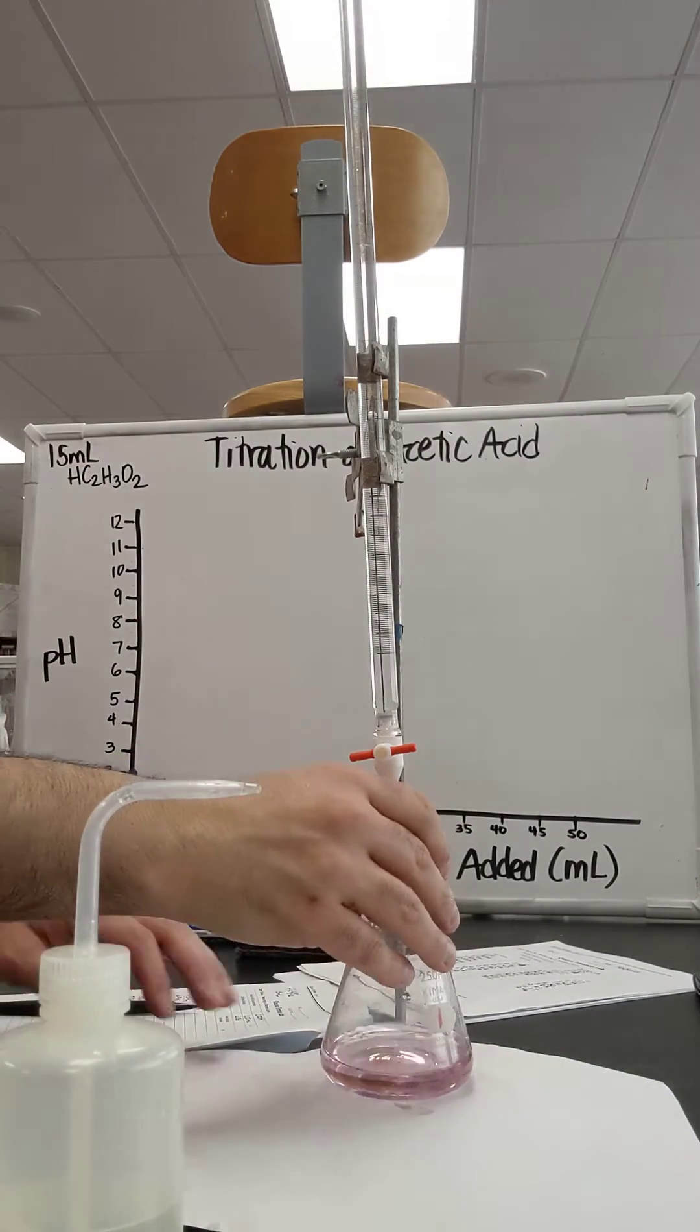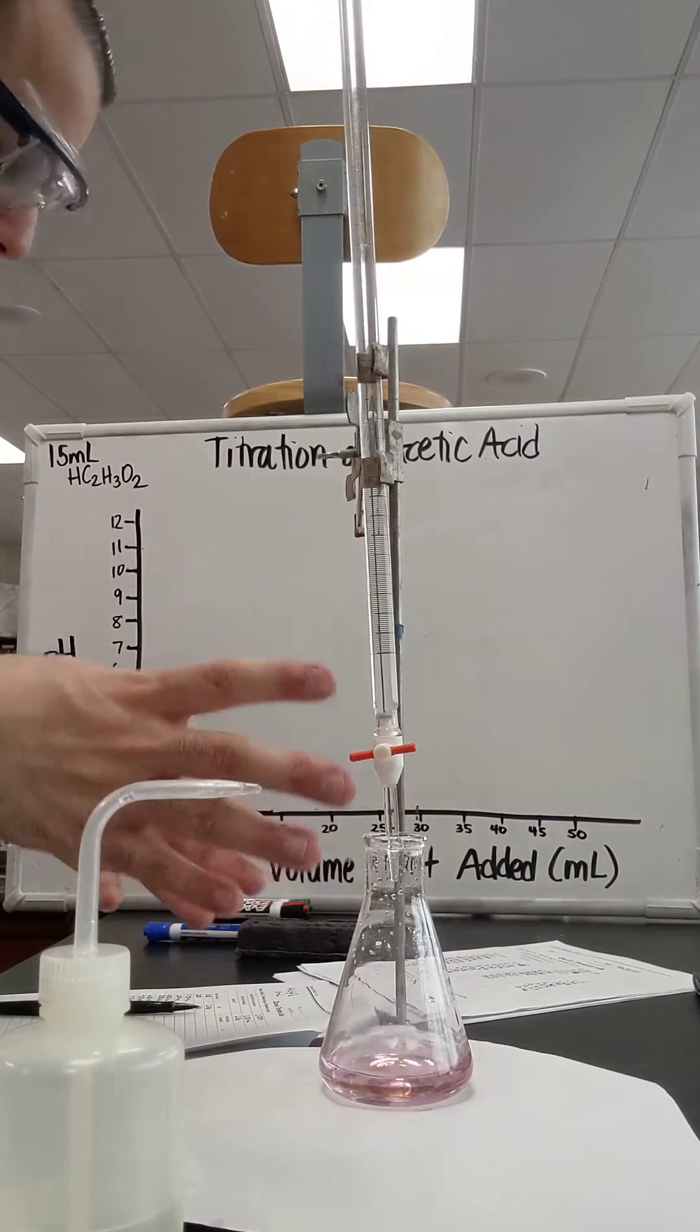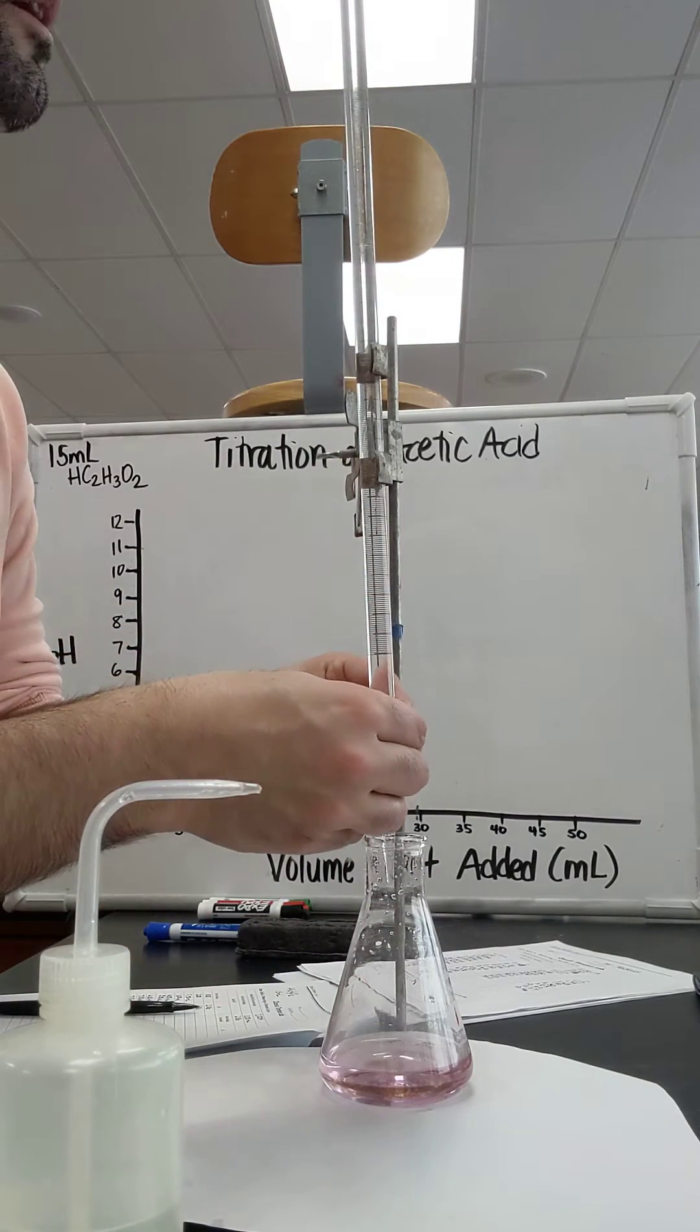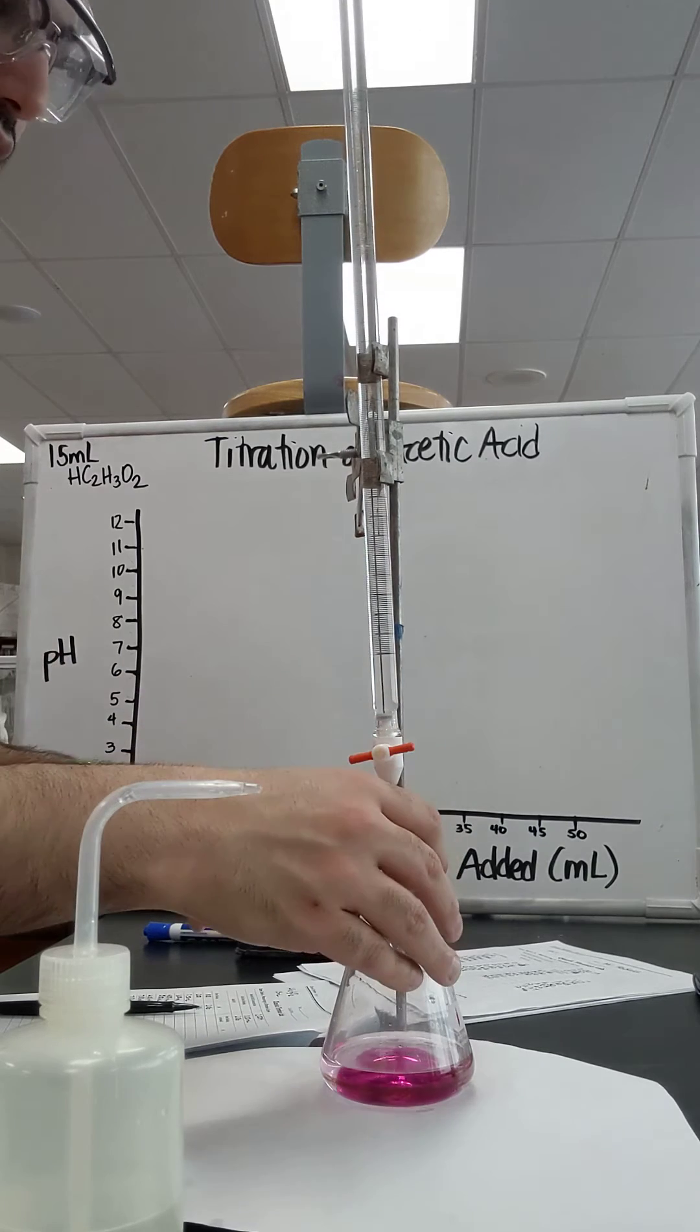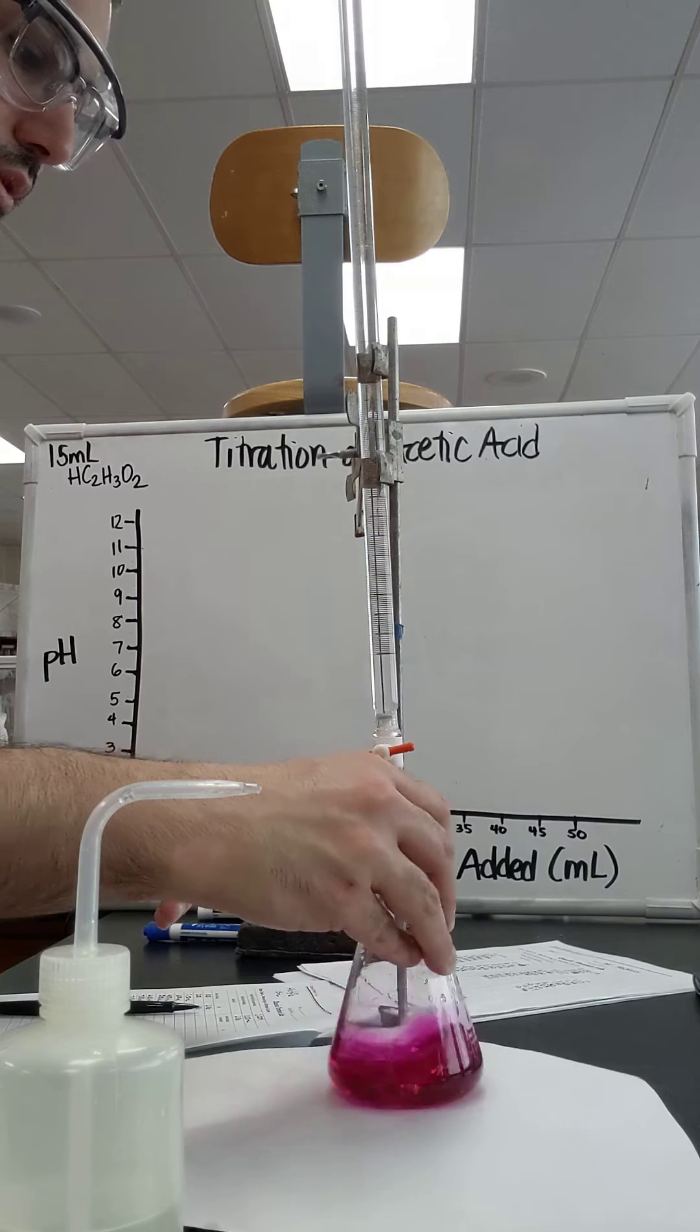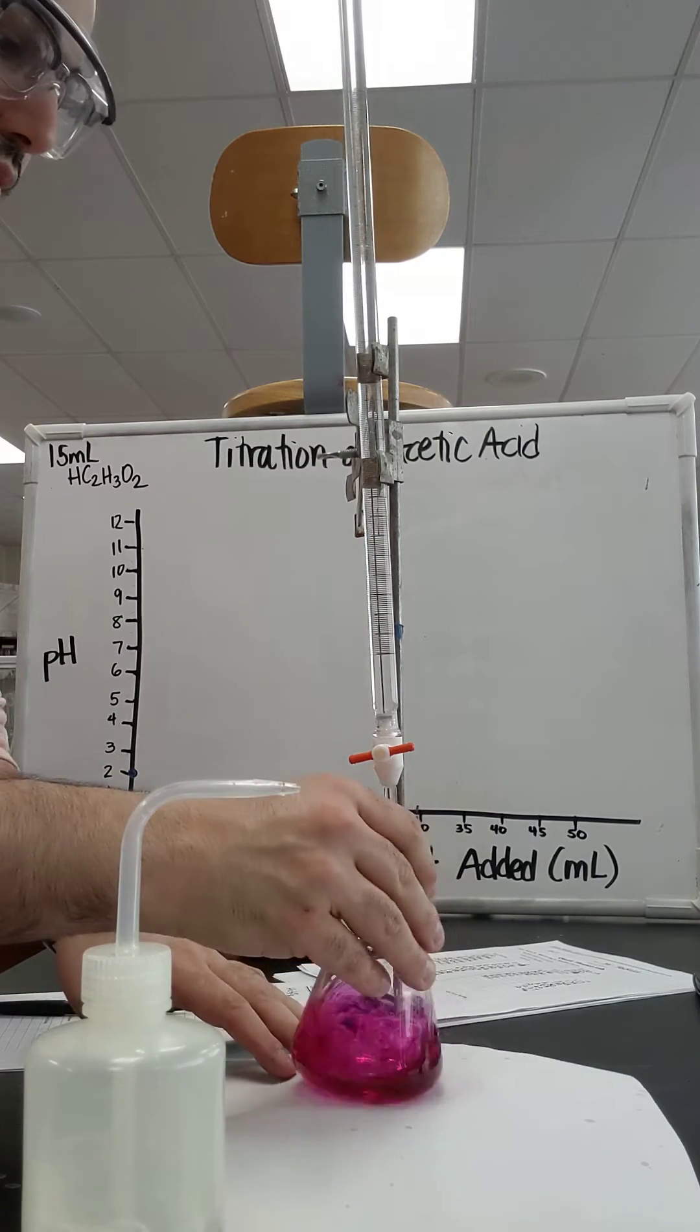Now it's faint pink a little bit more. Let's add maybe up to 9.5. I got a dark color. Swirl, swirl, swirl. Now I'm definitely past the end point.